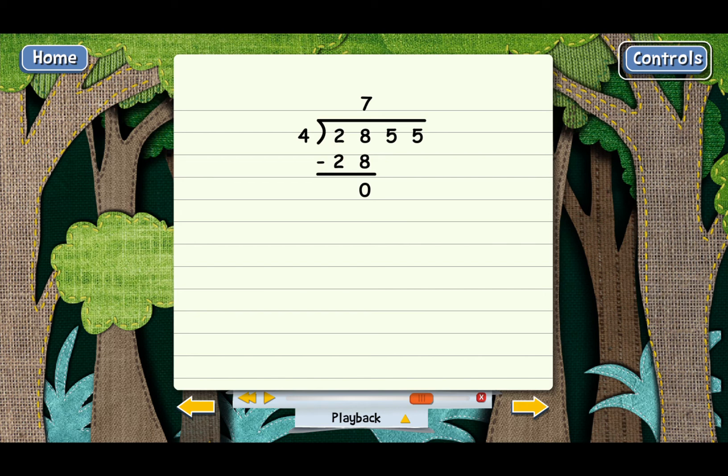Yes. It's time to bring down the next digit, which is a 5. That gives us 05 on the bottom. Don't get confused about that. That's just the same as 5. And now we start the whole process over again by dividing. How many times does 4 go into 5?